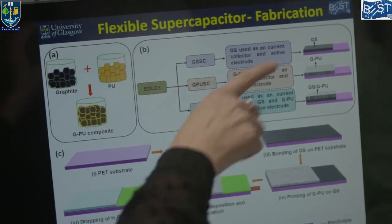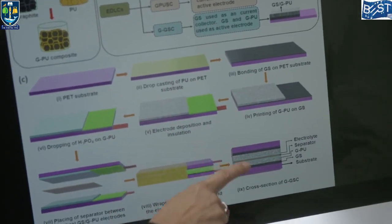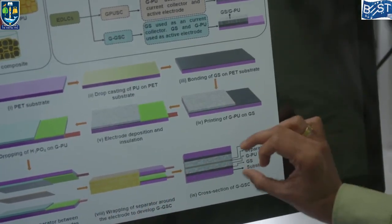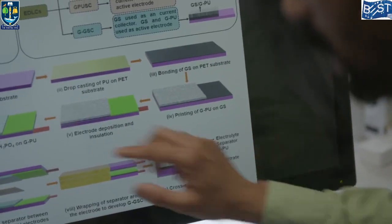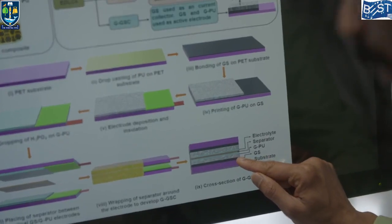So all of this comes down to this is a cross section of the supercapacitor. Yes. And what are the key layers in here? Here, you can see in this color a substrate. That's a flexible PET substrate. And then here we have a graphene sheet.